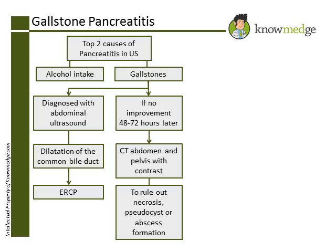Choice D, MRCP, is incorrect. Such an extensive diagnostic test is not required before performing an ultrasound, which also yields high information about the right upper quadrant. Choice E, endoscopic ultrasound, would be done if there was evidence of a pancreatic mass. This investigation is not necessary at this time.